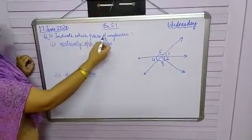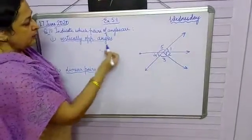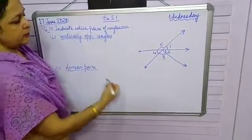Question number 10. Indicate which pairs of angles are vertically opposite angles. We have been given this figure and we have to find out the pairs of vertically opposite angles from these.